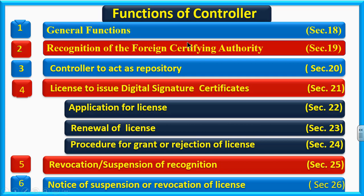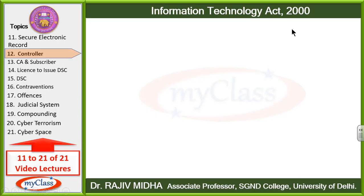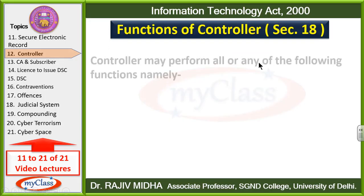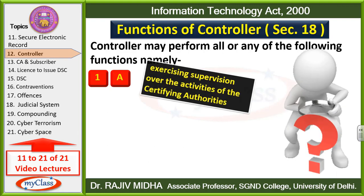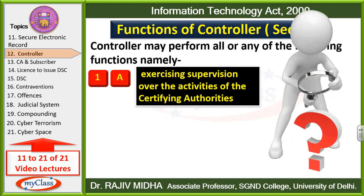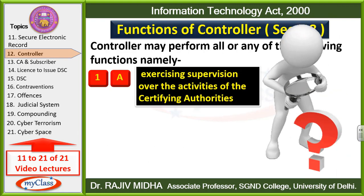Hum ne in sabhi sections ko ek ek karke understand karna hai. Sabse pahle mein take up karunga general functions which are given under Section 18. Controller may perform all or any of the following functions namely — ya toh controller yeh sab functions perform karega, ya in mein se kuch functions ko woh perform karega. Sabse pahle: exercising supervision over the activities of certifying authorities.